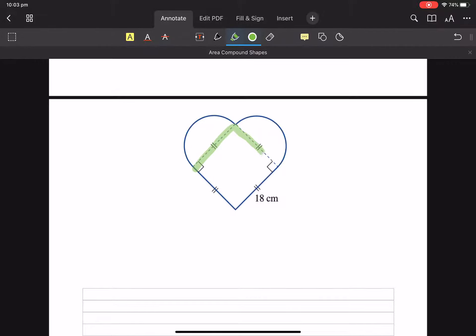So I can see a square area equals length times width equals 18 times 18, 324. I can see two half circles, which is a full circle.